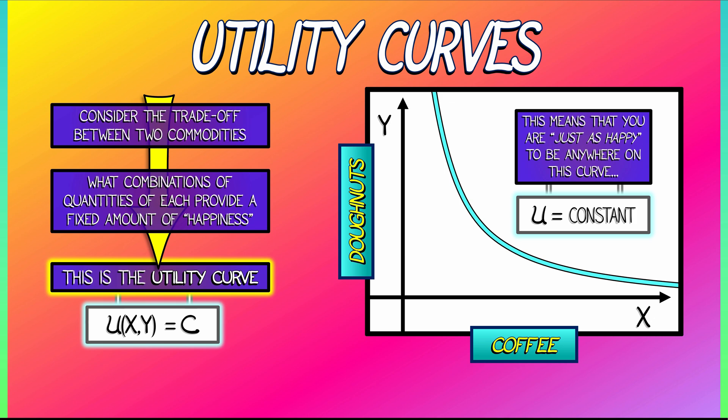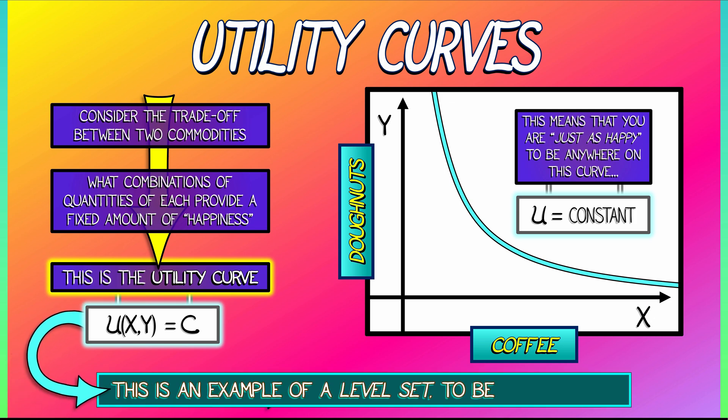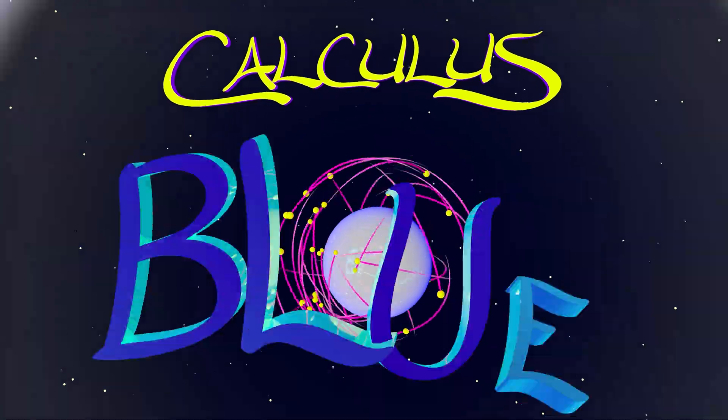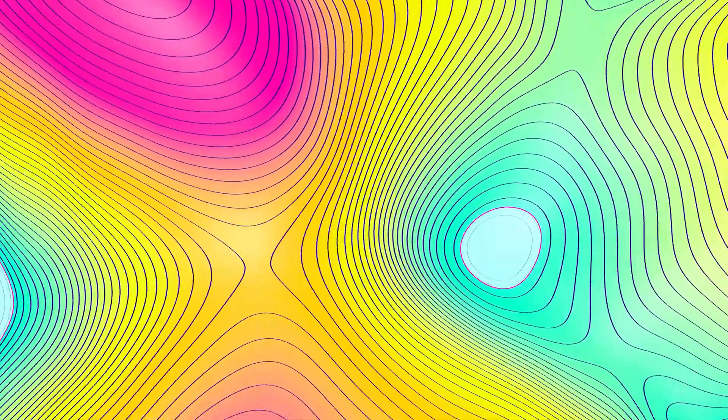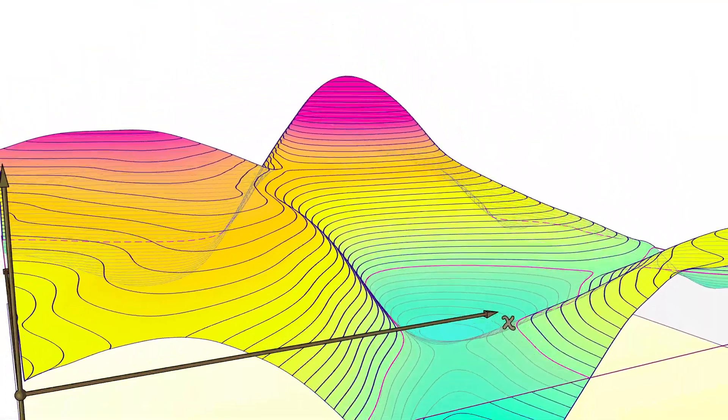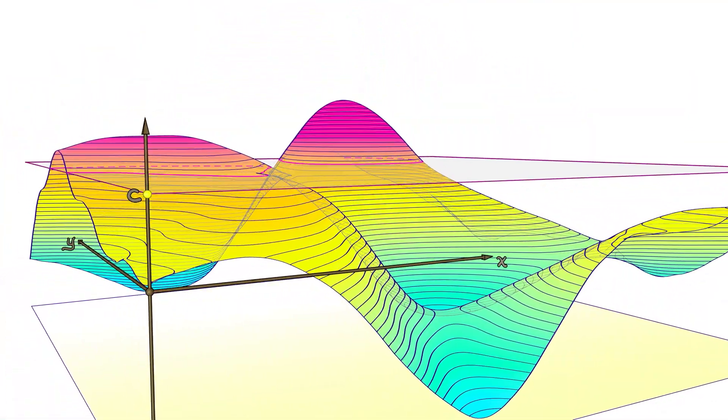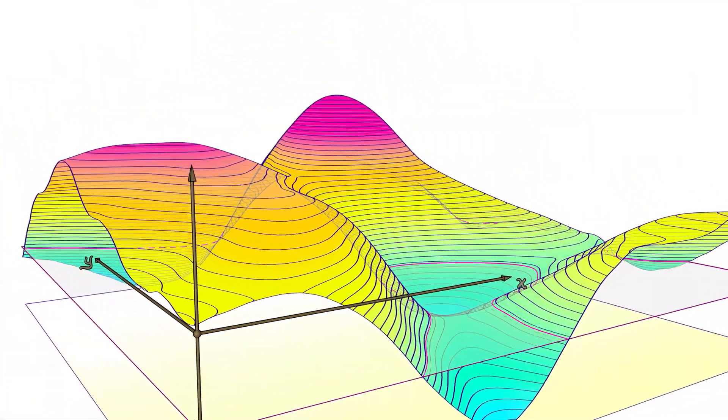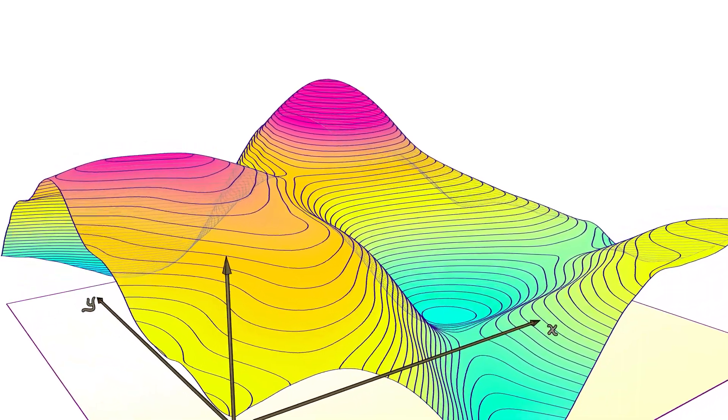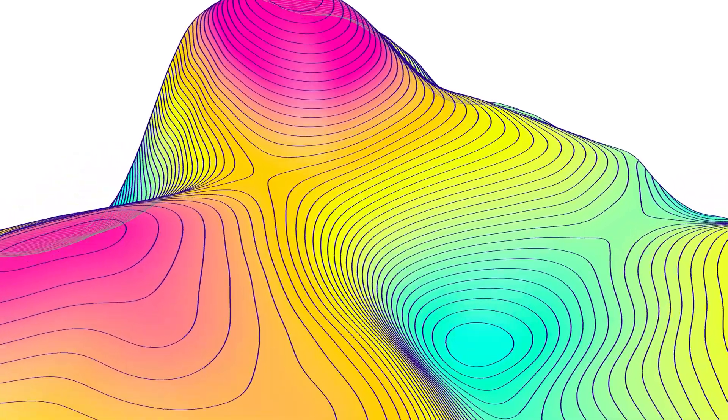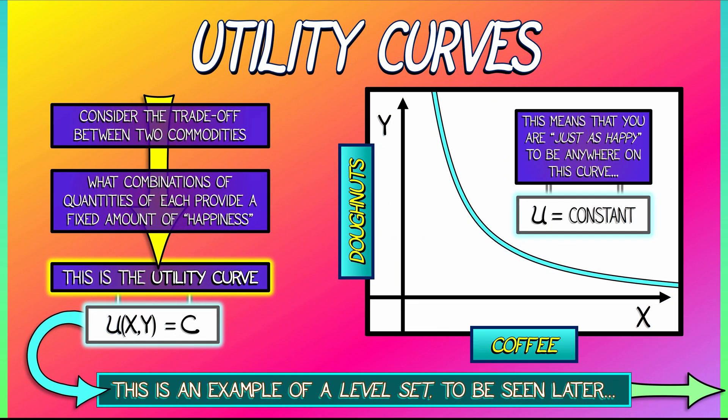I want you to remember this, because this is a great example of something called a level set. And you're going to see that in the future. Let's just fast forward a bit to the future when you're taking multivariable calculus. You're going to look at functions with two inputs, one output all the time. And considering where that function is equal to a constant is going to give you a curve in that plane that's called a level set, which back in this context of economics is a utility curve.